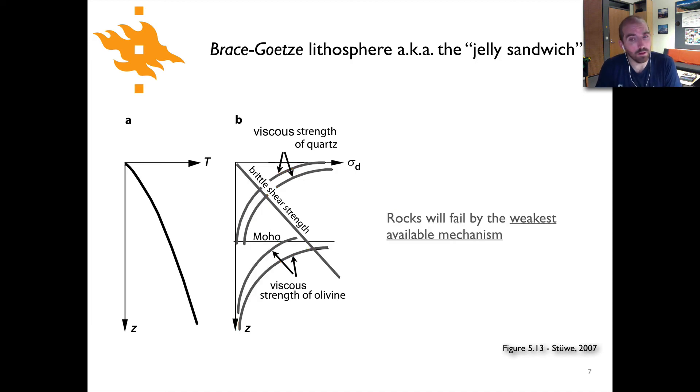We can also say that we know rock is going to fail by the weakest available mechanism. That means that in the upper part of the crust where rocks are much weaker in terms of their brittle strength than they are with their viscous strength we expect the rocks to fracture and deform in a brittle manner. Whereas if you go deeper and into the mid to lower crust where the viscous strength of rock is much lower than its brittle strength or its frictional strength then we would expect the rocks to flow in a viscous manner.